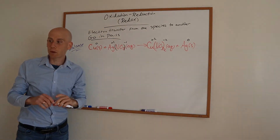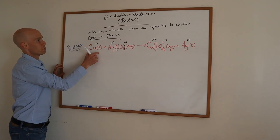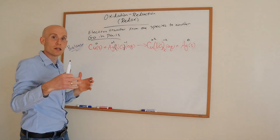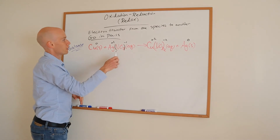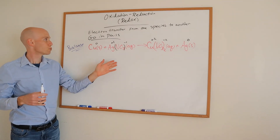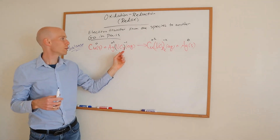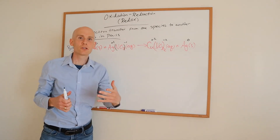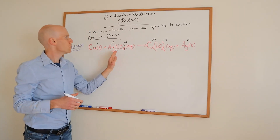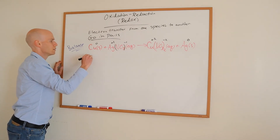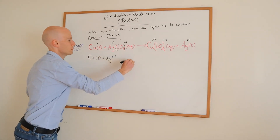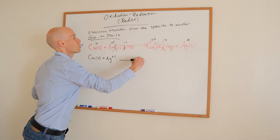You can see right away that copper goes from zero to positive two — its oxidation number was altered. And silver goes from positive one to zero — its oxidation number was altered as well. Nitrate did not change; it's negative one on both sides. The reason I wrote negative two is because there are two of them. So NO₃⁻ is just a spectator here, and many people would omit it — you can write the oxidation-reduction reaction without it and bring it back at the very end.